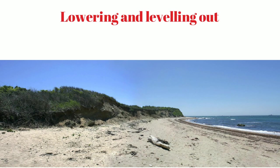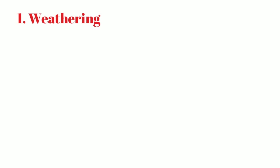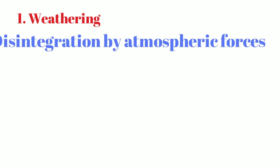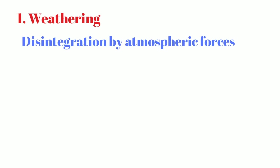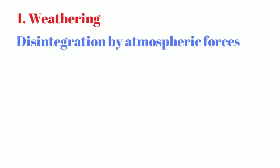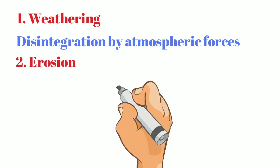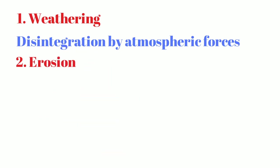This process is called denudation and there are 4 phases. The first phase is weathering - disintegration of rocks by atmospheric weather forces. The next phase is erosion, where moving agents are involved such as water and ice, causing erosion of the land.